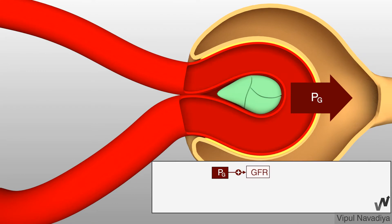Hydrostatic pressure in the glomerulus is essentially blood pressure in the glomerulus. It promotes filtration. It is about 60 mmHg and it is the highest capillary pressure in the body — no other capillary has this high a pressure.